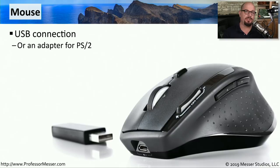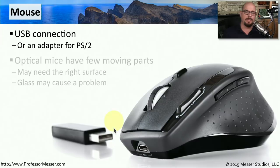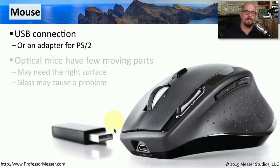Another popular peripheral is a mouse. It usually connects to your system with a USB connection, or there might be an adapter for PS/2. Your mouse might be wireless, using a wireless USB connection on your computer. The mouse we use today is usually an optical mouse with a limited number of moving parts. That light is used to determine if the mouse is moving, which can sometimes cause problems on a glass top. Fortunately, there are manufacturers that make a mouse specifically designed to work on a glass tabletop.